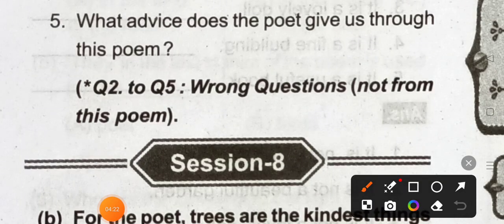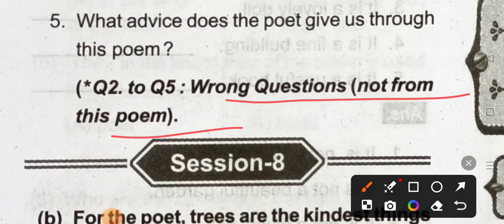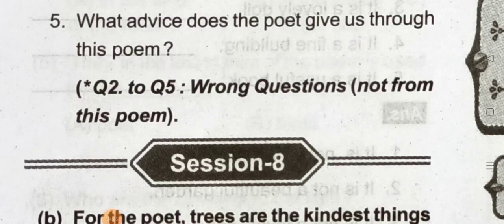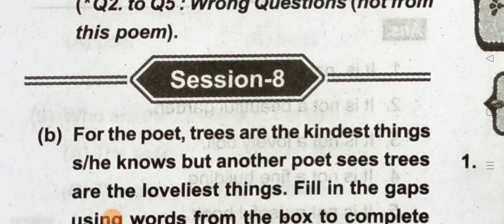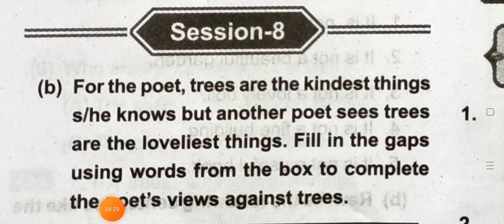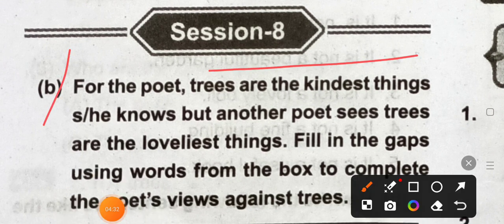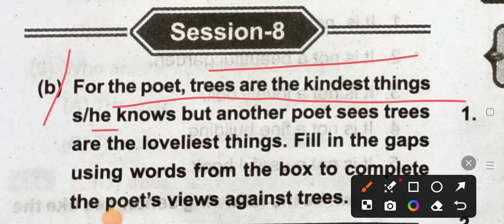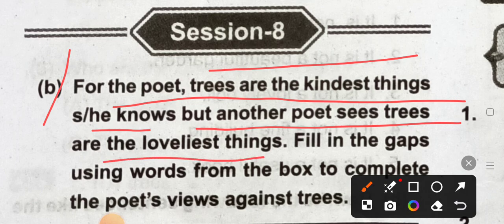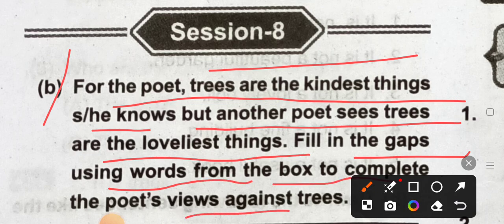Question 5: the wrong question — not from this poem. Section number 8: for the poet, trees are the kindest things he knows. But another poet sees trees as the loveliest things. Fill in the gap using words from the box to complete the poet's view about the trees.